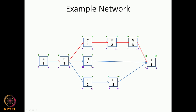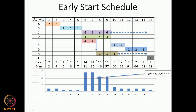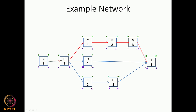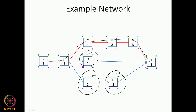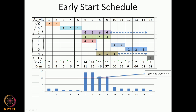We have this network we had considered in the last example and we had worked this out for the overallocation problem. We had the activities A to I here, and the critical path was A-B-C-F-G-I. Activities D, E, and H had float, and we were going to try to use the floats of these activities. In the earlier exercise, we used those floats to resolve the overallocation problem. Activity D has float, activity E has float, and activity H has float.